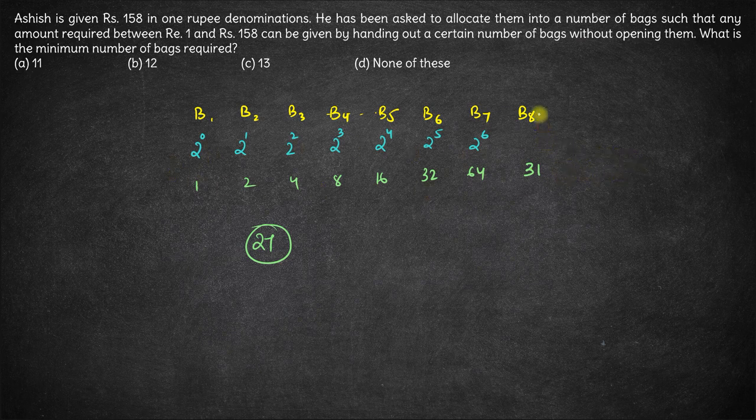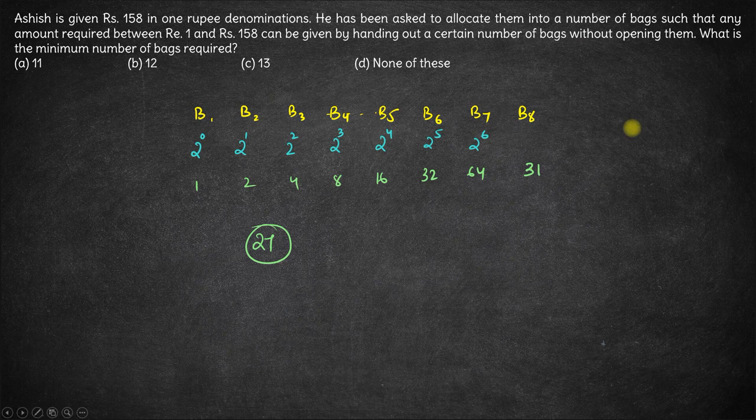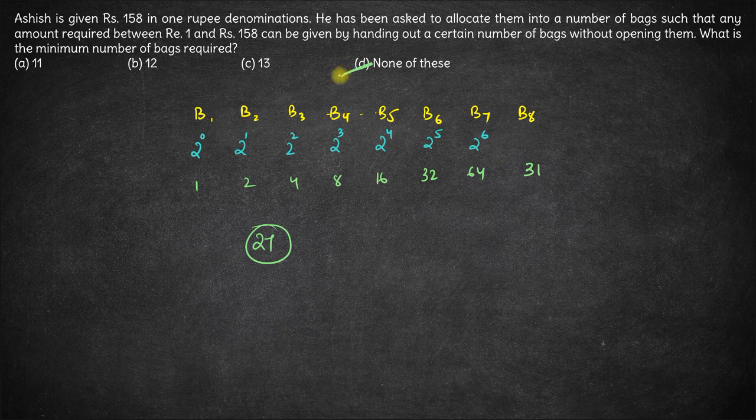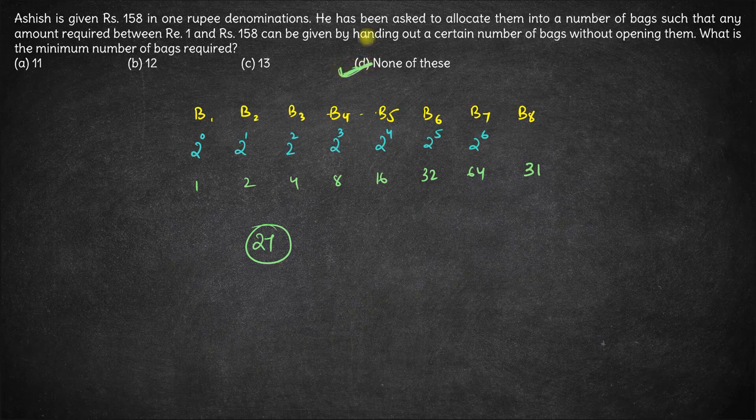So any amount from 1 to 158 can be given using these bags. The least number of bags required is 8 here. So the answer will be option D, none of these. The minimum number of bags required is 8, which is not there in the options. Hence, none of these is the right answer.